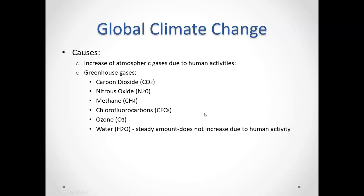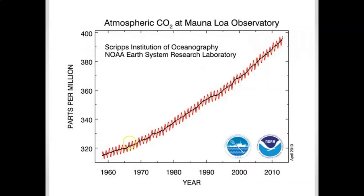Greenhouse gases also include CFCs — chlorofluorocarbons, which we'll talk about in a moment — as well as ground-level ozone and water vapor. Nitrous oxides and methane are very potent greenhouse gases, but they're not being emitted in quite the same quantities as carbon dioxide. Carbon dioxide is the big one because we're releasing so much of it. Even though the amount of CO2 in the air is very small — only about half a percent — these greenhouse gases essentially act as a thermal blanket and trap heat.